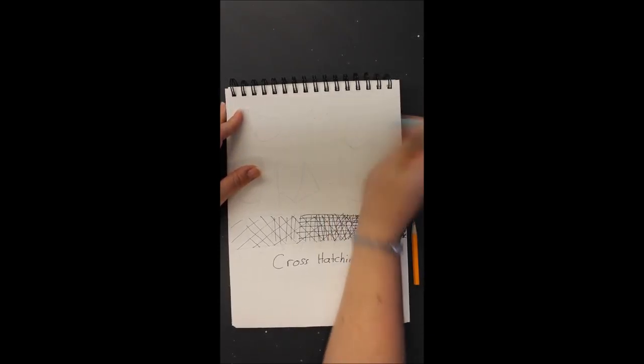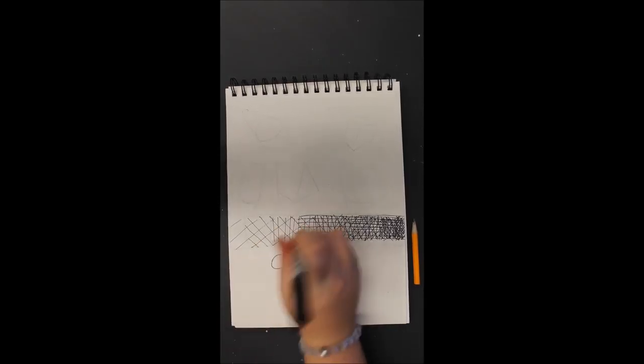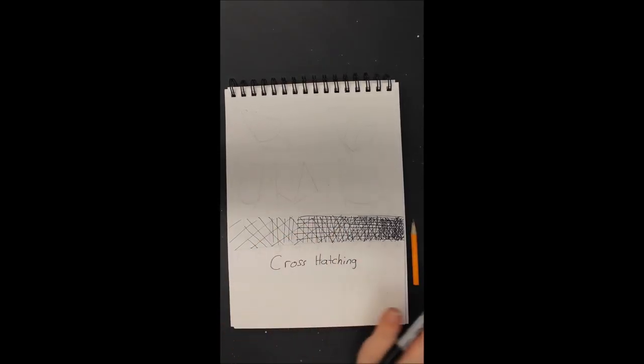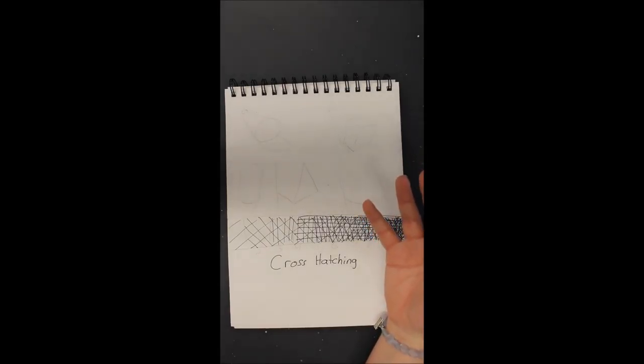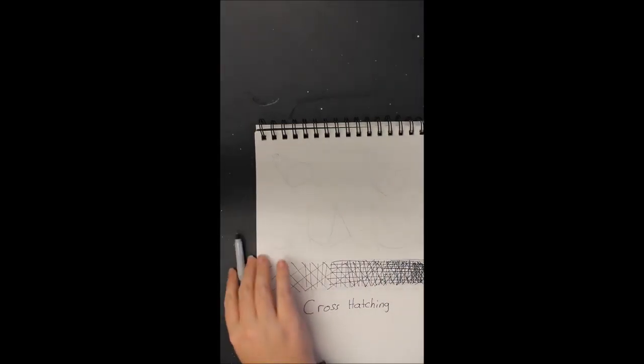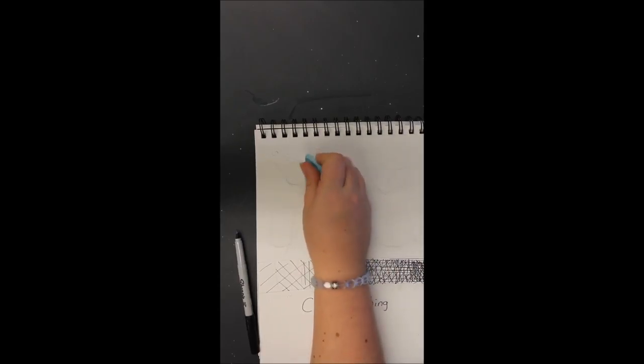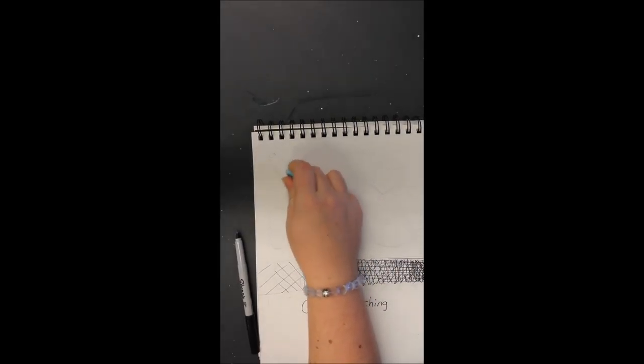So with cross-hatching, one thing that's important to keep in mind is that for our value scale, we just went in straight lines just to show the difference of value. But what we want to do is show value and form. So I'm actually going to show you the sphere because the direction that we use our cross-hatching in is going to be very important to give that illusion of form.